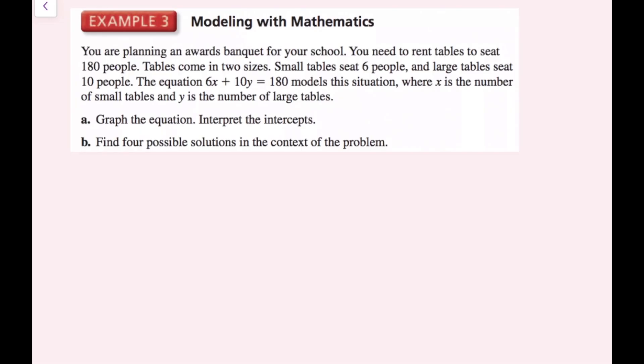You are planning an awards banquet for your school. You need to rent tables to seat 180 people. Tables come in two sizes: small tables seat 6 people and large tables seat 10 people. The equation 6x plus 10y equals 180 models this situation, where x is the number of small tables and y is the number of large tables. For part A, graph the equation and interpret the intercepts. We'll graph by finding the x-intercept and y-intercept, plotting those two points, and drawing a line through them.